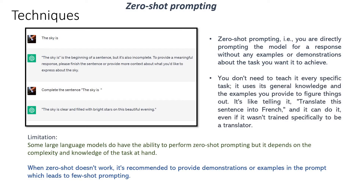Zero-shot prompting is the next topic. This is a simple, easy-to-understand concept. You are directly prompting the model for a response without any examples or demonstrations about the task you want to achieve. For example: 'The sky is.' That's all — and it generates a response. Or: 'Complete the sentence: The sky is.' It also gets a response. You do not have to teach in detail — it uses its general knowledge to get the result.